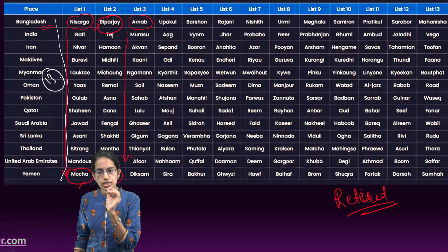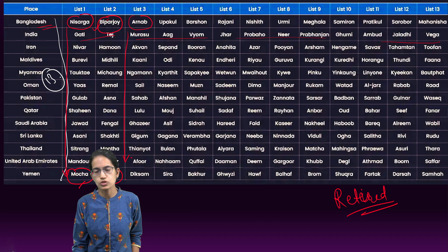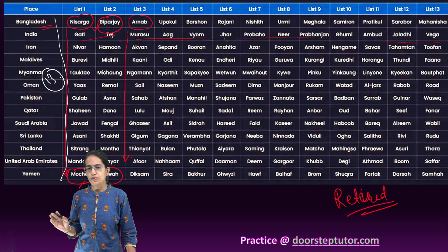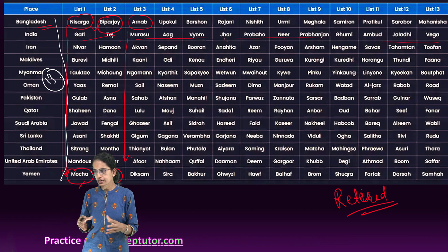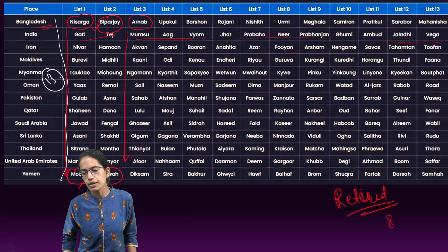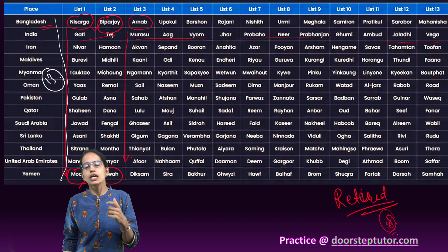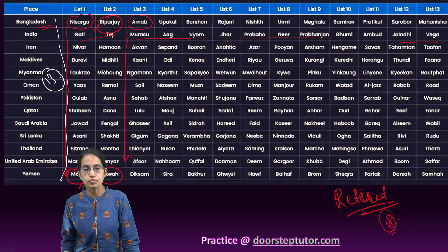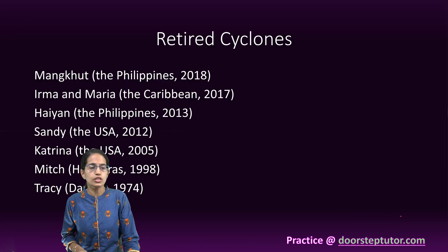The names suggested by India include Gati, Tej, Mursa, Agh, Vyom, and Jhar. Another interesting rule is that the maximum possible length of a cyclone name could be eight letters. Additionally, the name should not be rude or too cruel, and a systematic effort is made so that the name is not political or culturally affiliated.